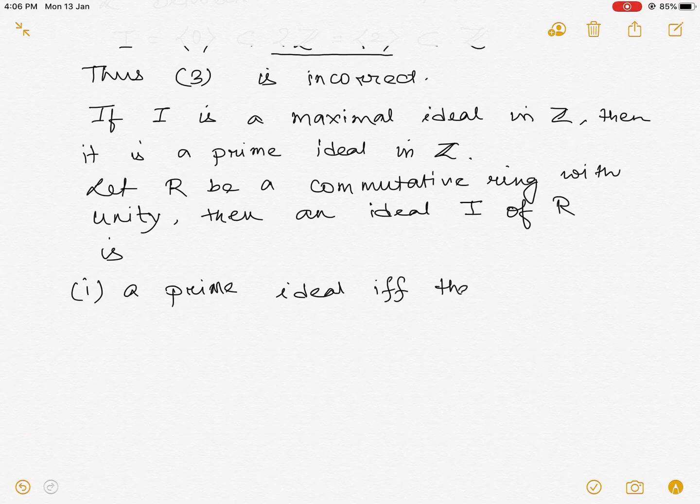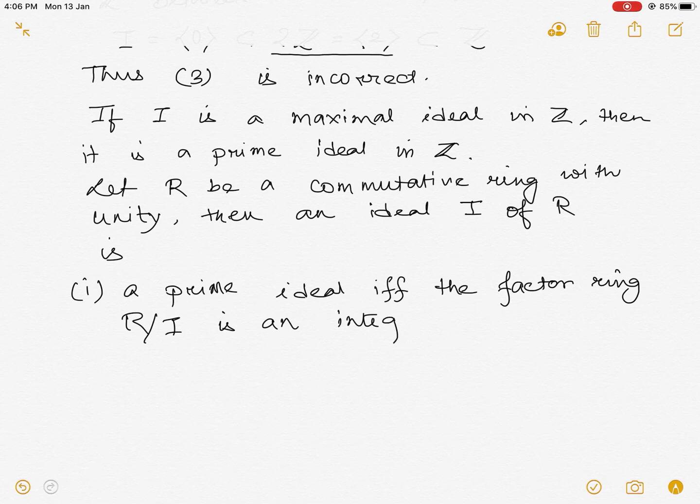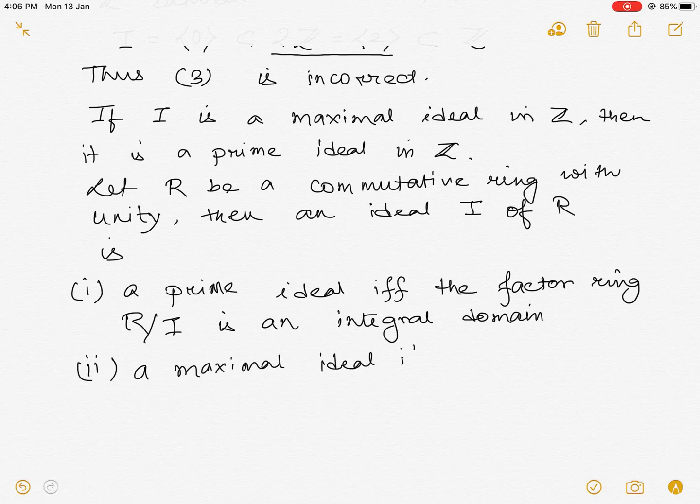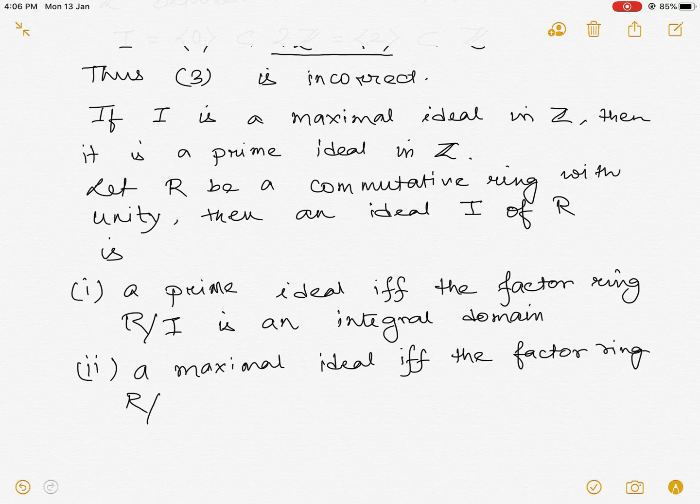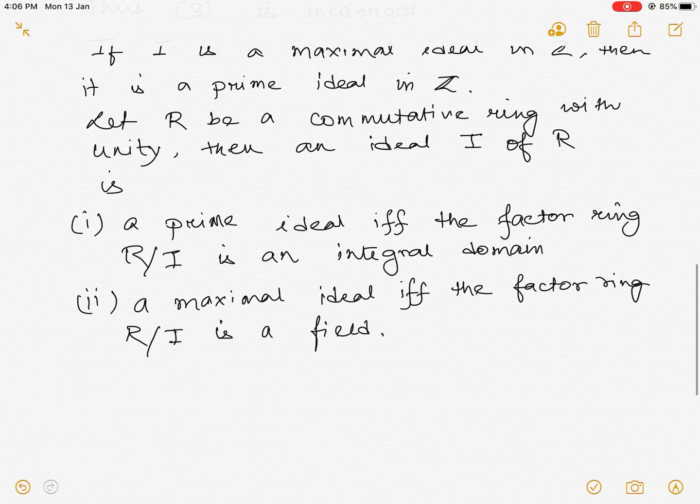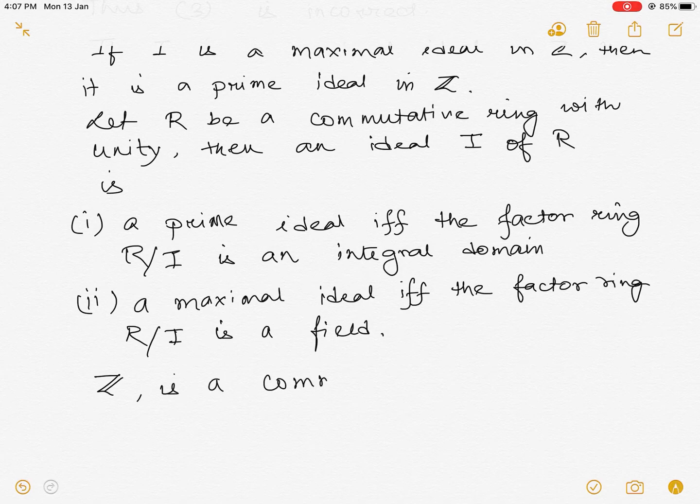then an ideal I is prime if and only if the factor ring R/I is an integral domain, and I is a maximal ideal if and only if the factor ring R/I is a field. Now since Z is a commutative ring with unity,